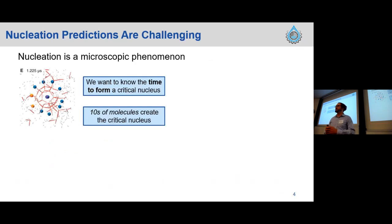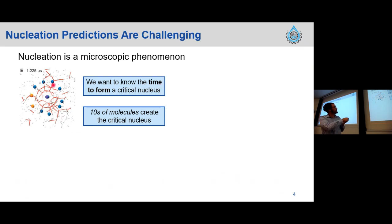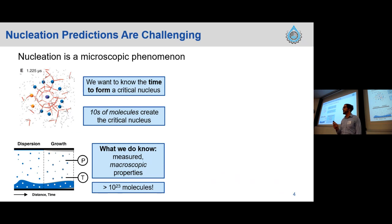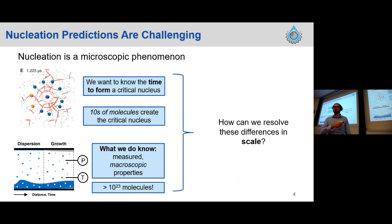This sounds great in theory, but in reality it's quite challenging. The primary reason is that nucleation is really a microscopic phenomenon — we're talking about times to form a critical nucleus on the order of tens of molecules. But what we know in reality, if we're lucky, are macroscopic properties — many many orders of magnitude higher numbers of molecules, greater than 23 orders of magnitude higher. If we're lucky we'll know the pressure and temperature for every section of our pipeline; we often don't, so we need to use a flow line simulator as an interpretive tool. Our nucleation model needs to resolve these differences in scale — going from macroscopic properties to understanding how microscopic phenomena play out.